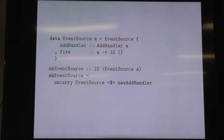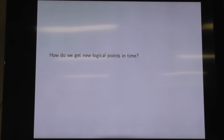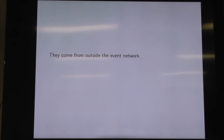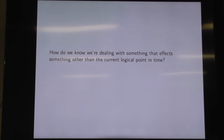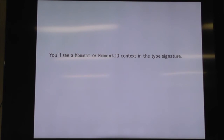We've got to wrap that up to make it a little bit neater — we have a fire function to the outside, and register events from the inside. This is going to be the first thing that gives us new points in time. Previously in functors, the outputs happen at the same time as the inputs. But how does the first event happen? It happens whenever there's a firing — that's where we get our new points in time. There are exactly as many observable logical points in time as there are firings from the outside.